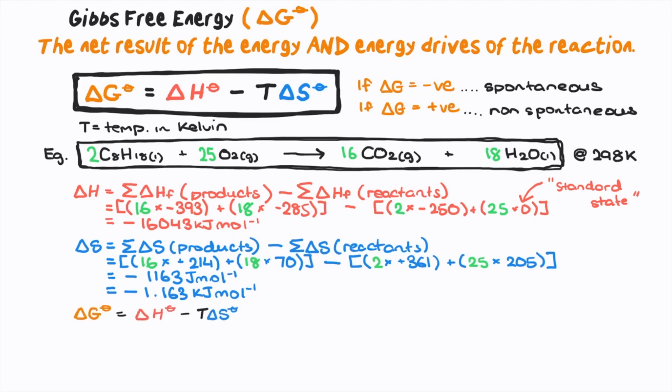Now delta G is delta H minus T times delta S, which is negative 15696.43 kilojoules per mole. Let's assume those calculations are correct because that was a lot of writing.